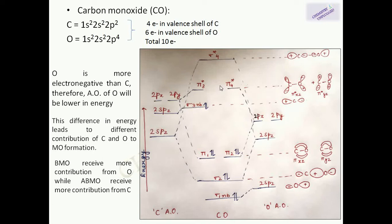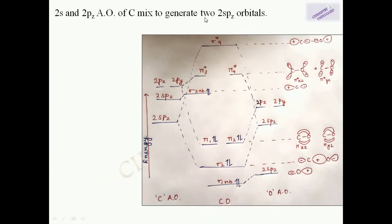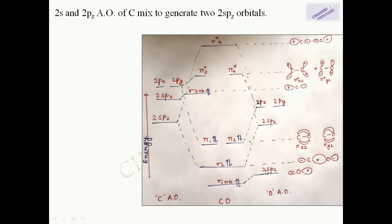The 2s and 2pz atomic orbitals of carbon can mix to generate two spz orbitals. Similarly, the 2s and 2pz atomic orbitals of oxygen mix to generate two spz orbitals. However, the extent of mixing of 2s and 2pz is more for carbon than oxygen, because mixing is possible when atomic orbitals have the same symmetry and the difference in energy is very low.